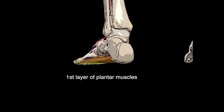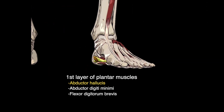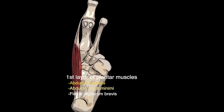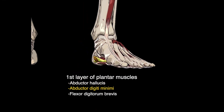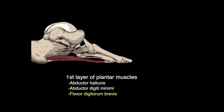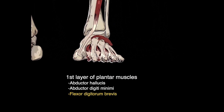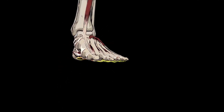The first layer of muscles of the plantar part of the foot consists of the abductor hallucis, abductor digiti minimi, and flexor digitorum brevis. The abductor hallucis flexes and abducts the hallux and supports the longitudinal arch of the foot. The abductor digiti minimi abducts the fifth digit and flexes the metatarsophalangeal joint of the fifth digit. The flexor digitorum brevis is responsible for flexion of the metatarsophalangeal and interphalangeal joints of the second to fifth digits.